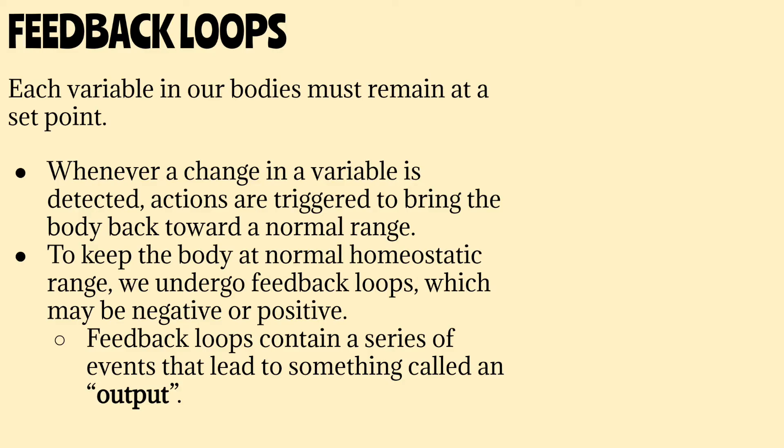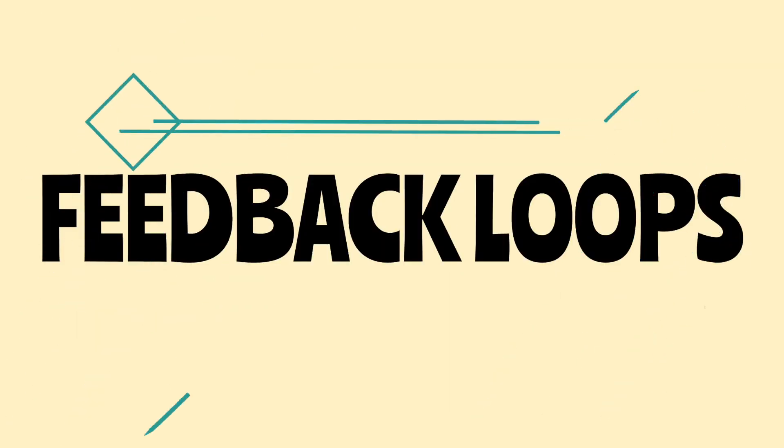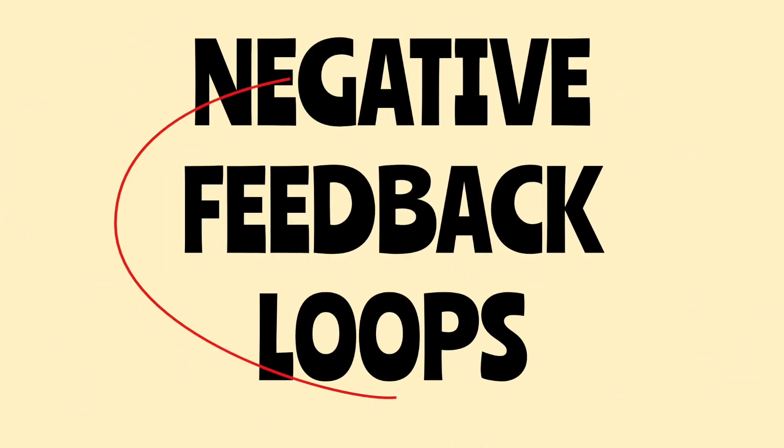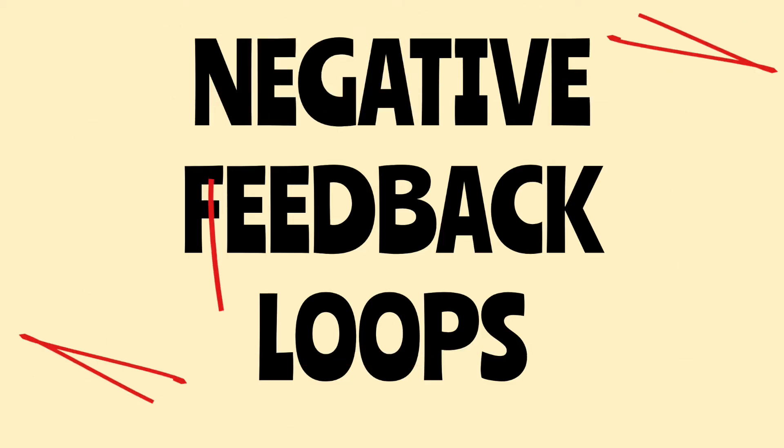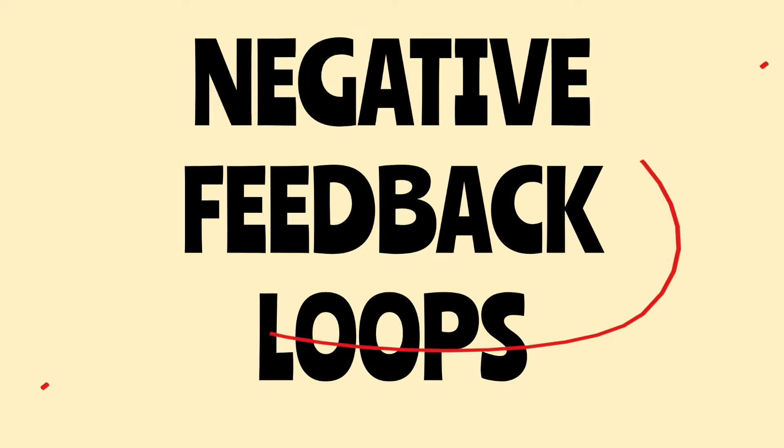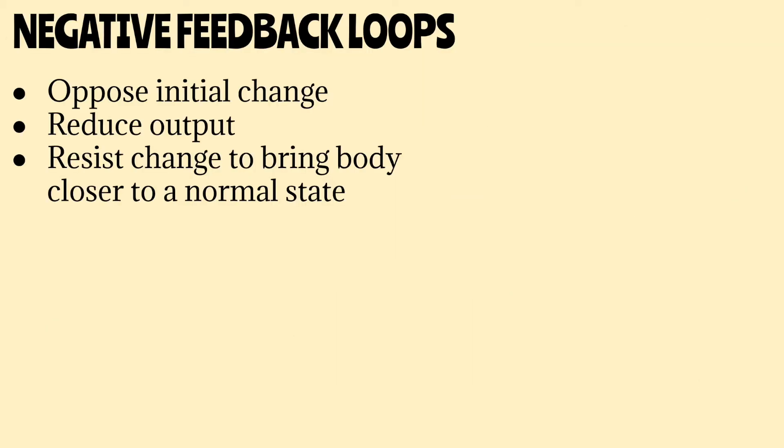Now, whenever a change in variable is detected, actions are triggered to bring the body back to homeostatic range. This is done through feedback loops. Feedback loops may be negative or positive, but most homeostatic mechanisms are carried out via negative feedback loops. Negative feedback loops work by opposing or moving away from whatever the change in variable is. Negative feedback loops reduce output and resist change to bring the body back to its normal homeostatic range.